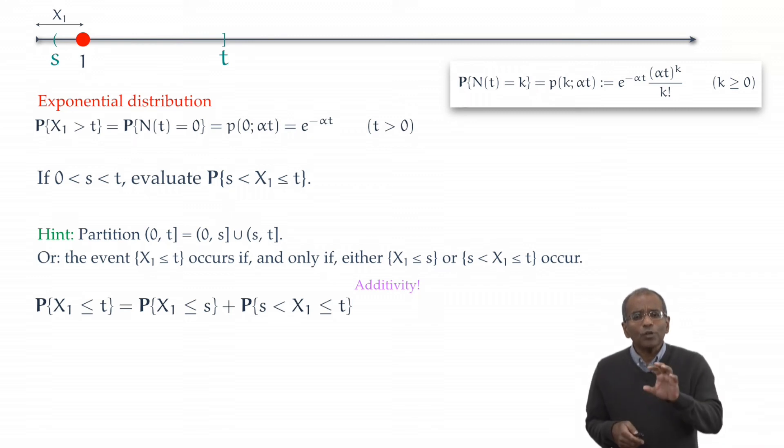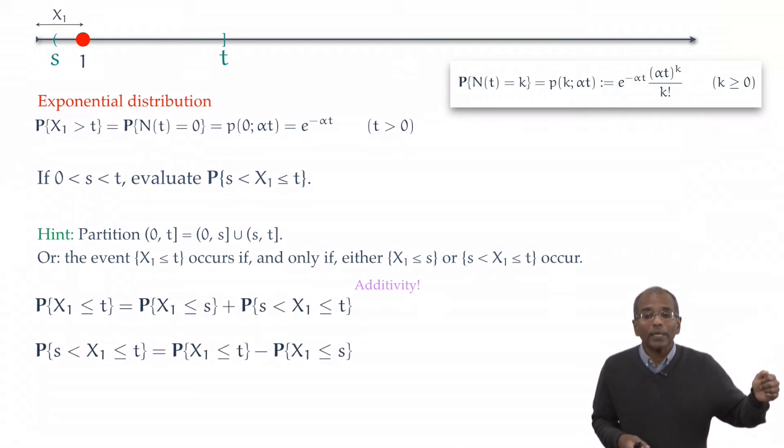Let's rearrange this to focus on the probability of interest. And so, the probability that the first arrival lies between s and t is exactly the probability that the first arrival occurs at or before t, from which you take away the probability that the first arrival is at or before s. Again, this is just a consequence of additivity of probability measure.